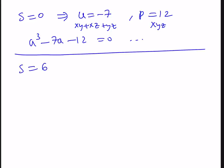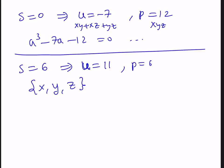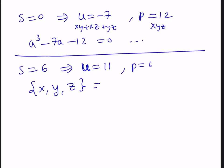If S equals 6, we get a nice solution: U equals 11 and P equals 6. Using Vieta's formulas, x, y, z are roots of a nice cubic, giving the solution set {1, 2, 3} and all its permutations. This is actually how I came up with the problem — I started with 1, 2, 3 and computed those power sums.